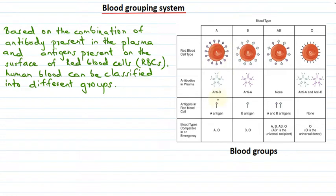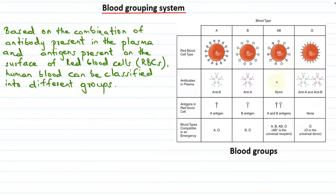The compatible blood types for A blood group are A and O. For B blood group, it forms when there is presence of anti-A antibody in plasma and B antigen on the surface of RBCs, and the compatible blood types are B and O. In case of AB blood group, there are no antibodies present in plasma, while on the surface of RBCs we can find both antigen A as well as antigen B. AB type is compatible with all other blood groups — A, B, AB, and O.